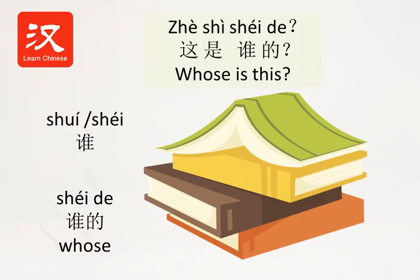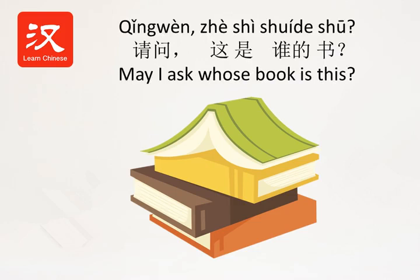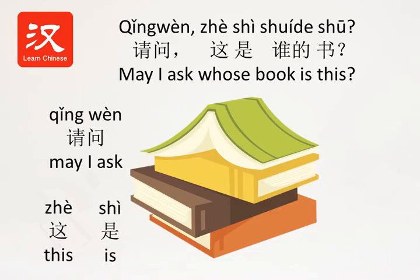这是谁的。您好，请问这是谁的？这是我的。您好，请问这是谁的书？这是我老师的。Now, if you're looking at a book, you may ask: 请问这是谁的书? 请问 means 'may I ask', 这 is 'this', 是 is 'is', 谁的 is 'whose', and 书 means 'book.' 请问这是谁的书 — may I ask whose book this is?